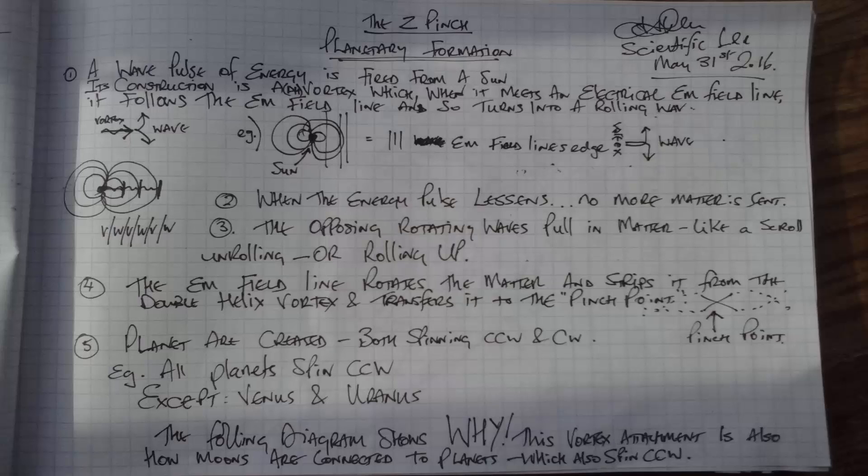Now when the energy pulse lessens, there is no more matter sent - there is only energy being sent. The opposing rotating waves pull in matter like a scroll unrolling or rolling up. The EM field line rotates the matter and strips it from the double helix vortex and transforms it to the pinch point. Waves, planets are created both spinning clockwise and counterclockwise.